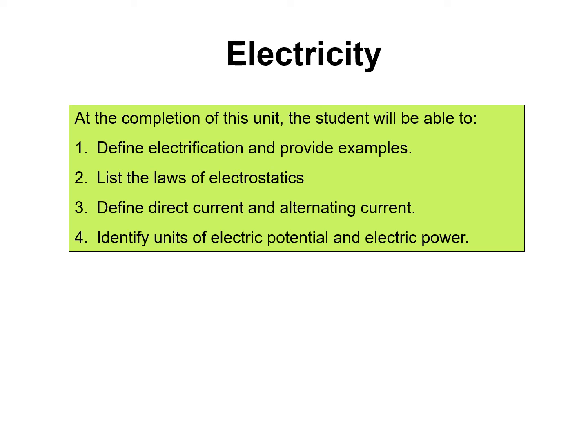Hello, everyone. Today we're going to talk about electricity as part of the RADS 201 course. In this lecture, we're going to talk about four different objectives: define electrification and provide examples, list the laws of electrostatics, define what's meant by direct current versus alternating current, and identify the units of electric potential and electric power.